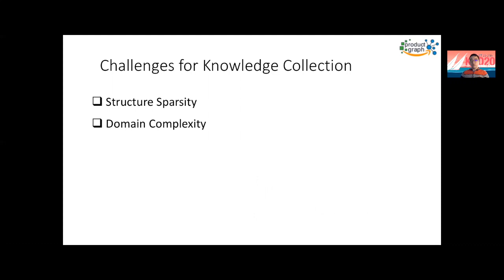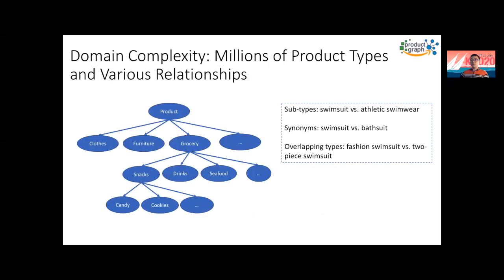The second challenge is domain complexity, which means you have millions of product types with various relationships. For example, you have clothes, furniture, grocery, and for grocery you have snack, seafood. And for these types, if you think about the relations, there are subtypes — one product type is actually a subtype of another one, and some product types might be synonyms for each other, and some types might be overlapping with each other. This all makes the problem more complex.